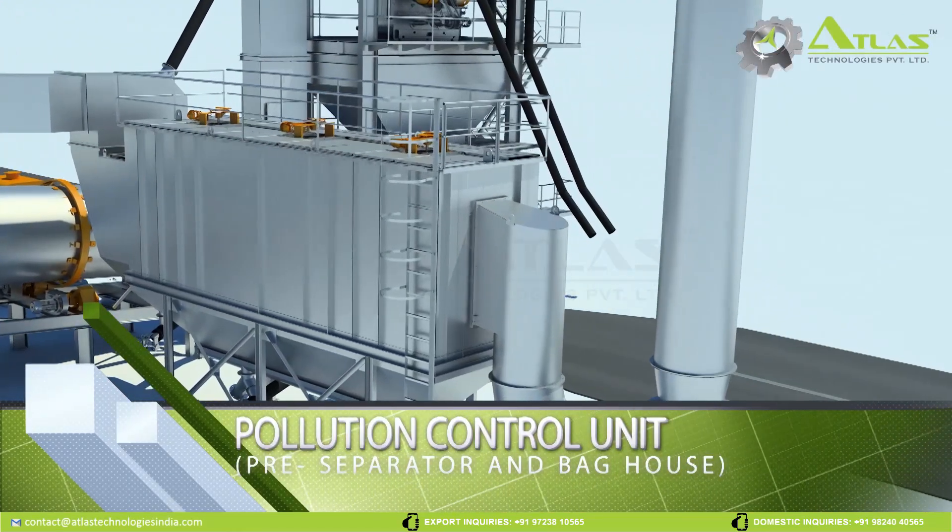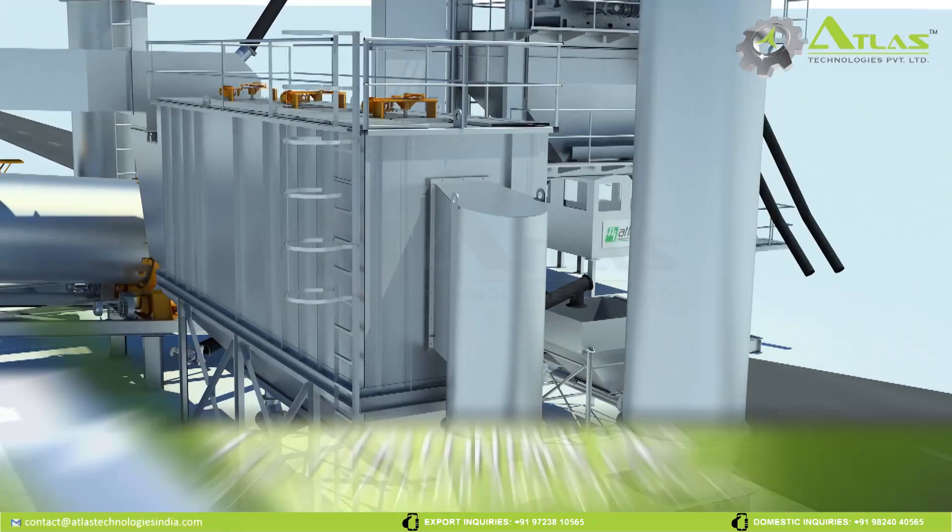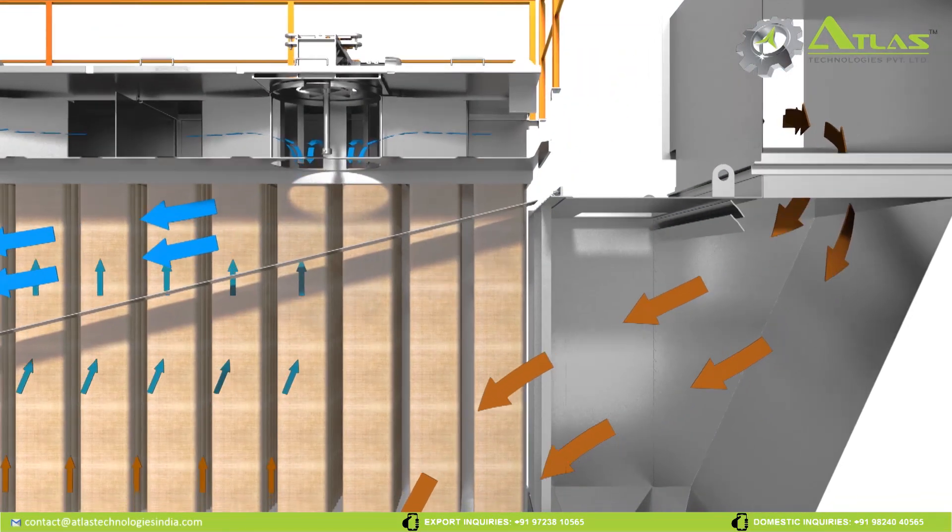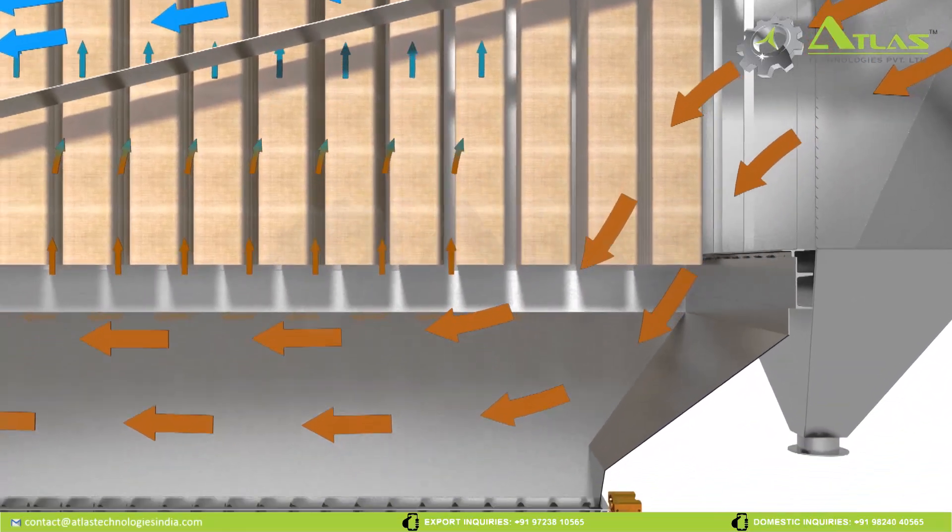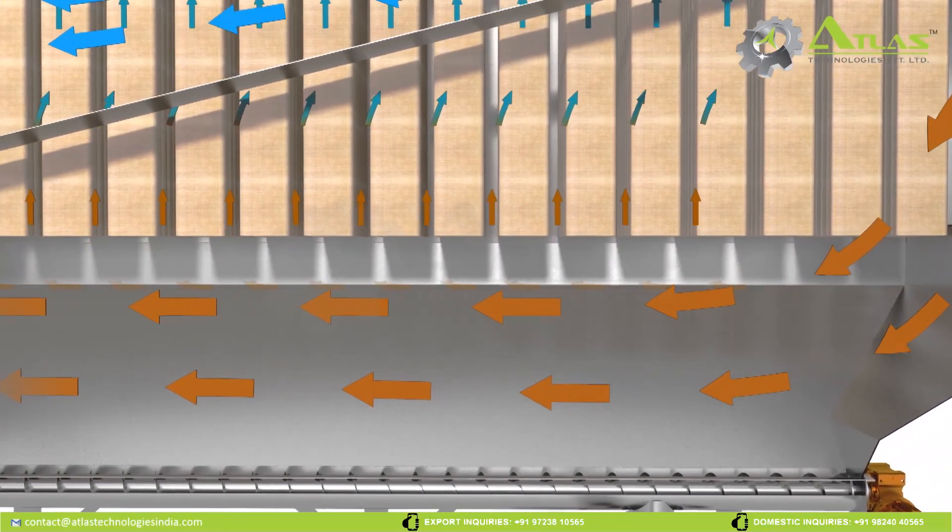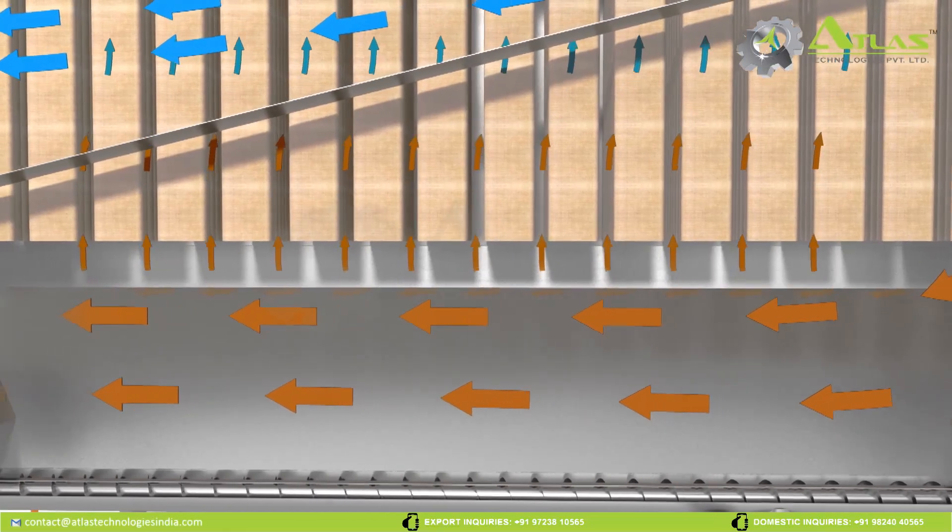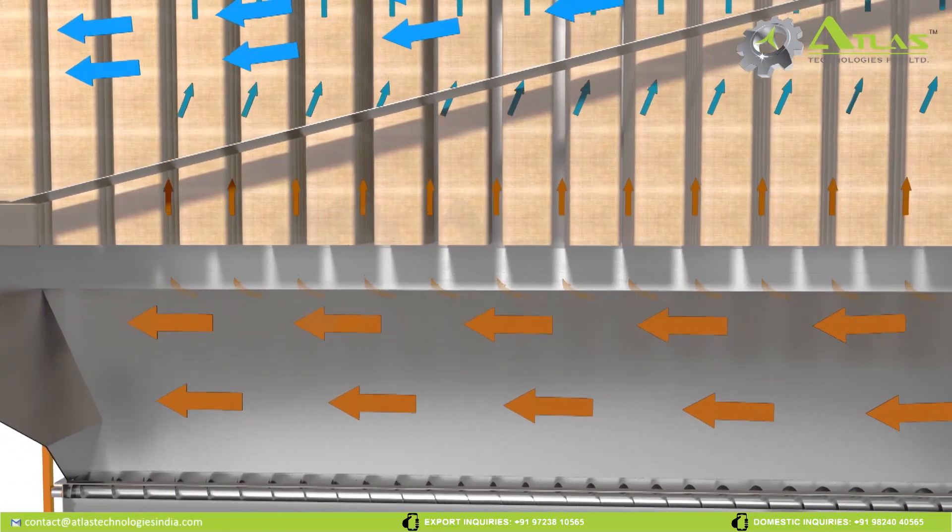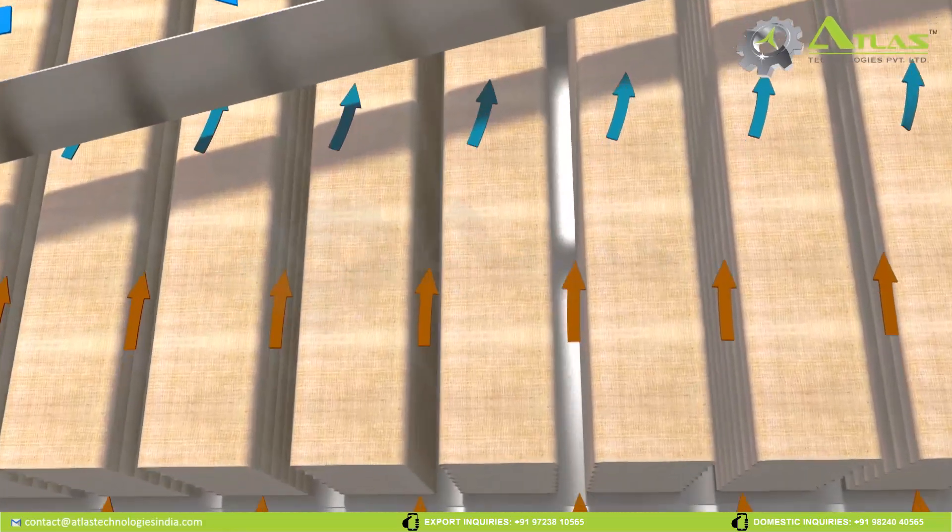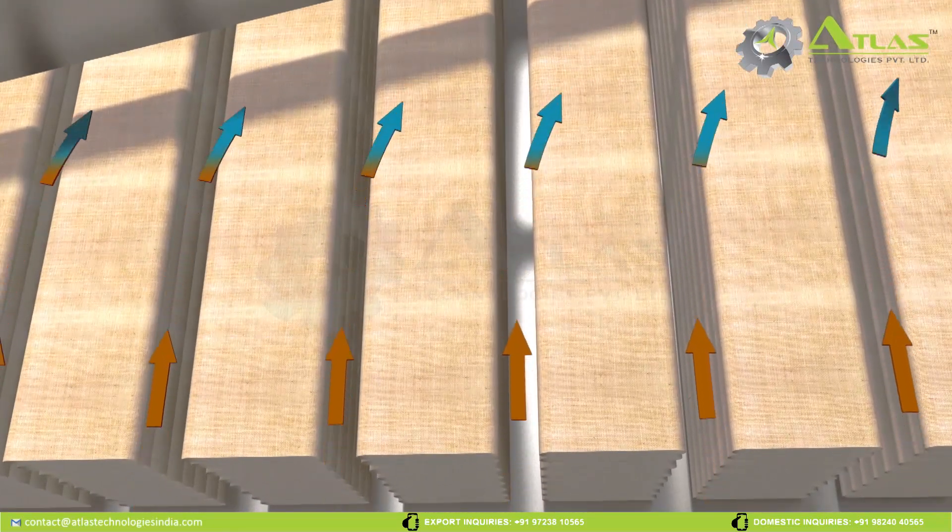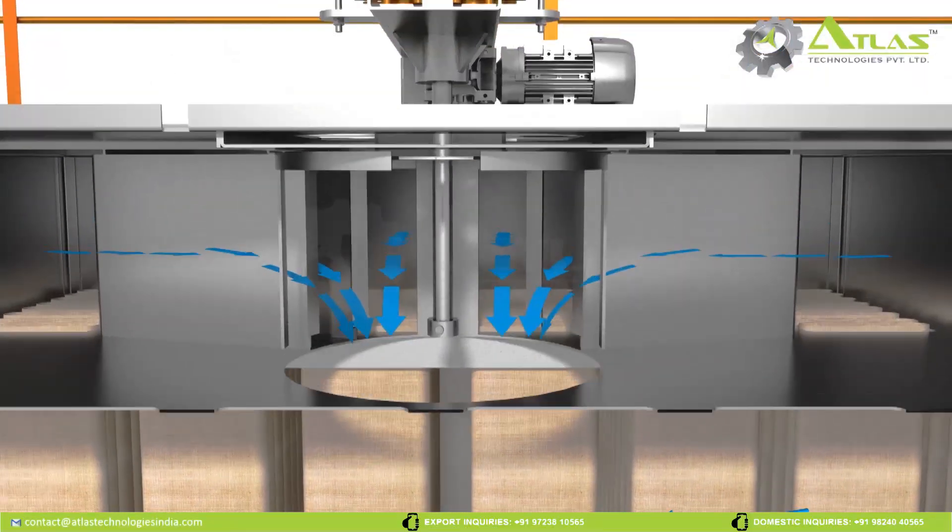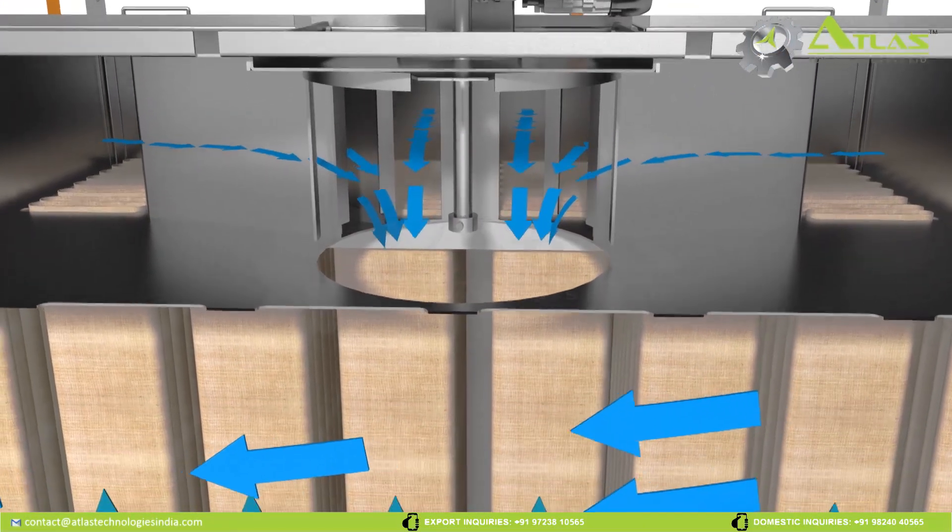Pollution Control Unit. The air along with dust particles enters into the pollution control unit. The heavy particles are separated from air in the pre-separator area. Then it's allowed to pass through a series of bags with the help of induced draft system. Fine dust particles will get accumulated on the bag and clean air will pass through the bags and be released into the atmosphere.